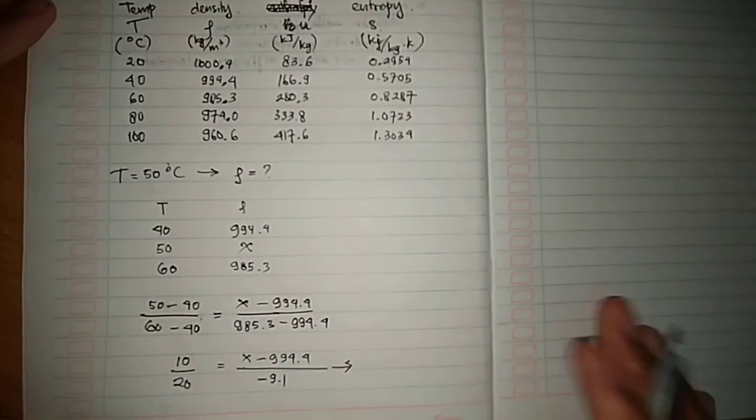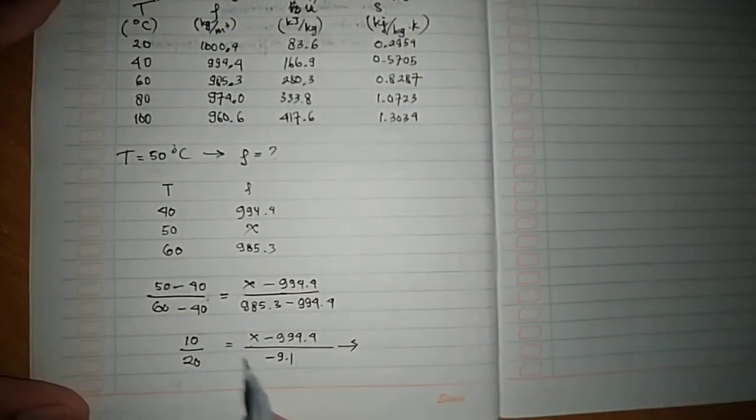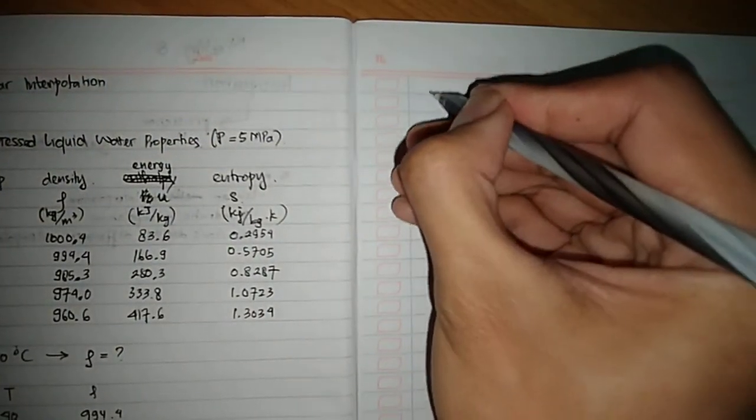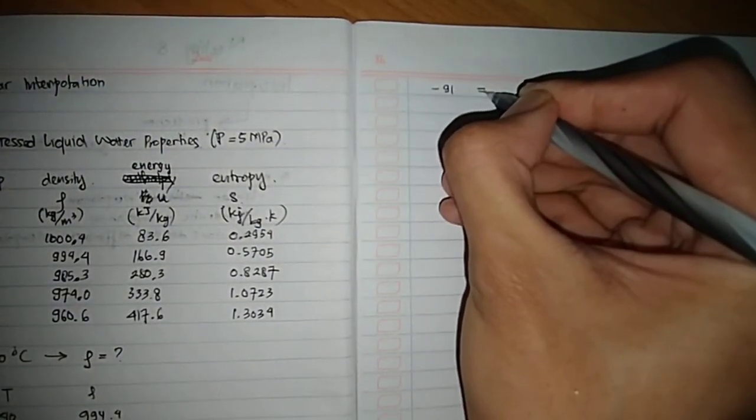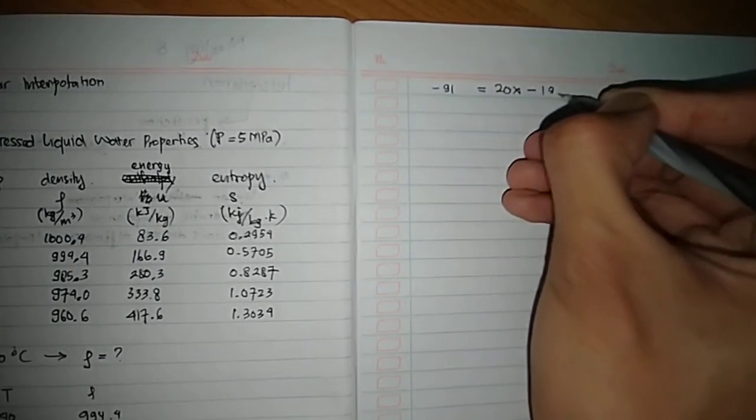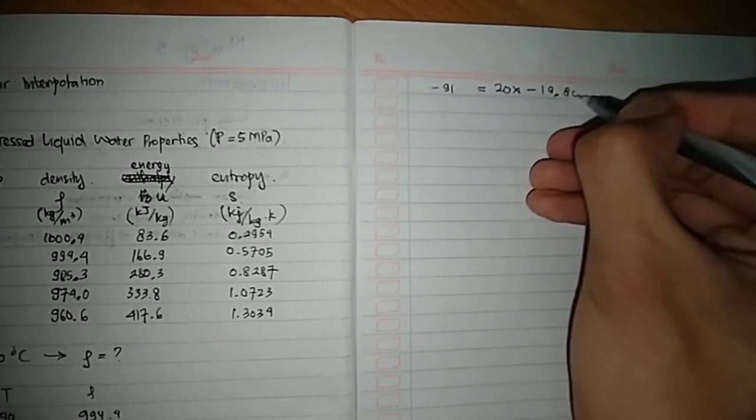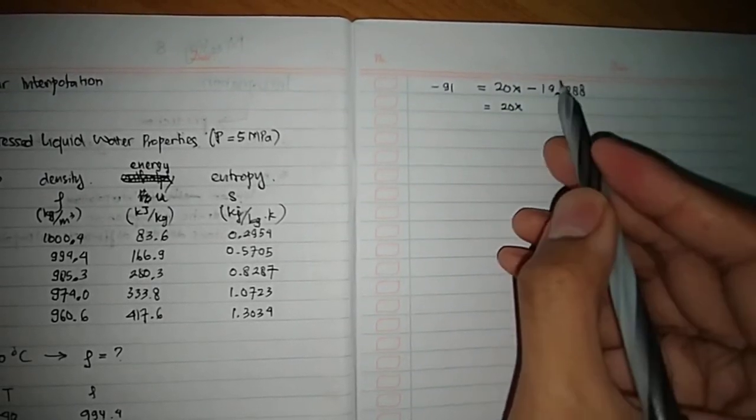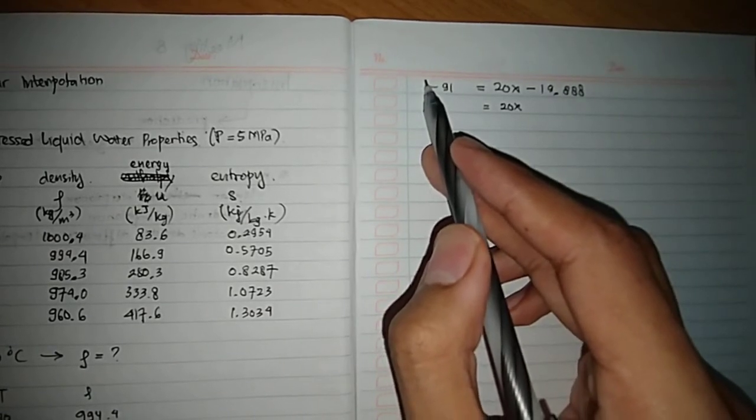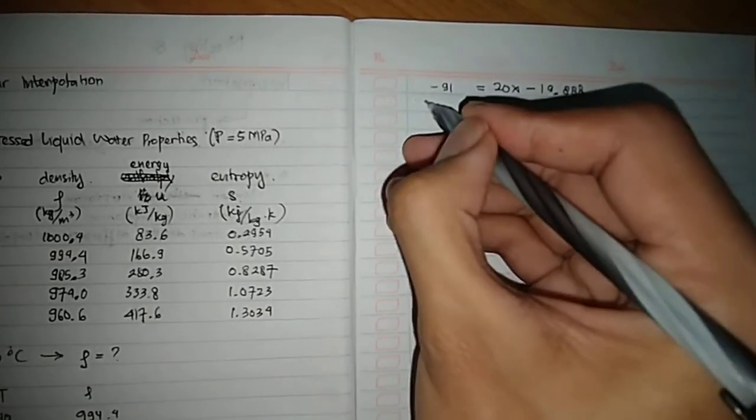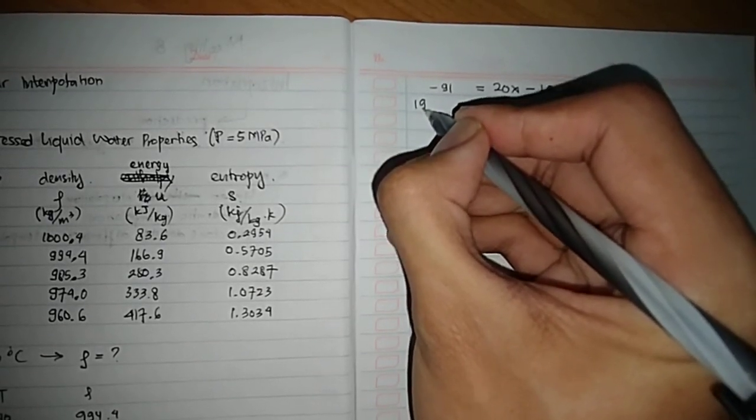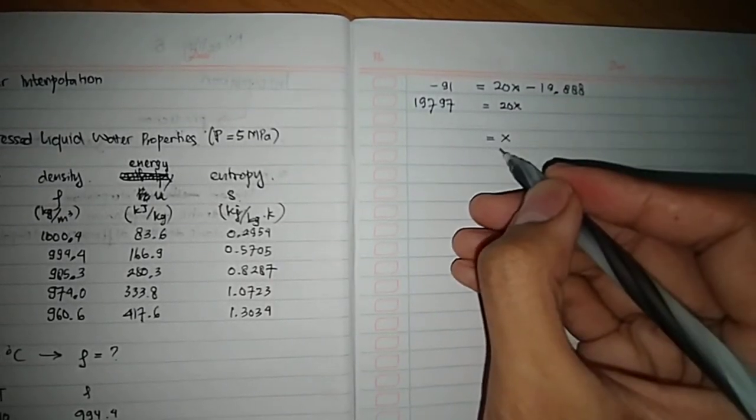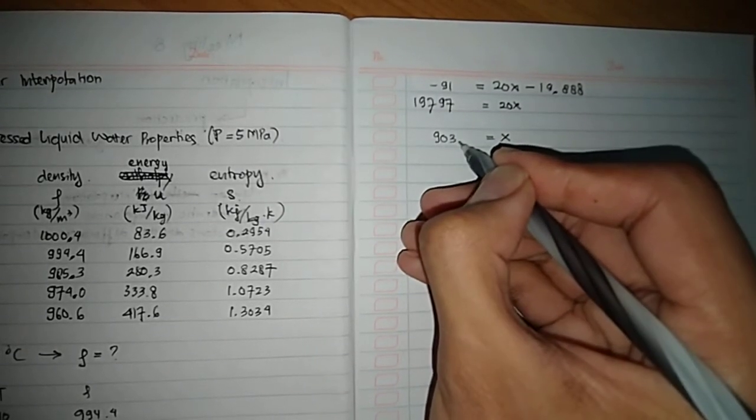And you will get minus 91 equals 20x minus 19,888. Then you move this to this segment. You will get 19,797, and the value of x will be 989.9.